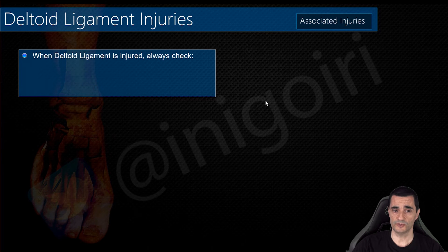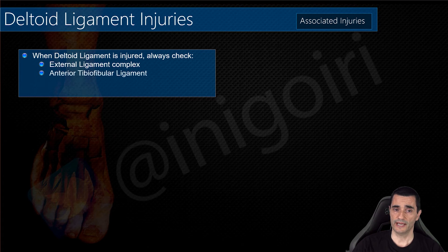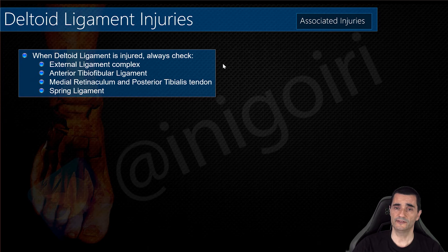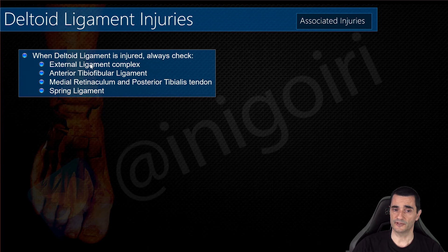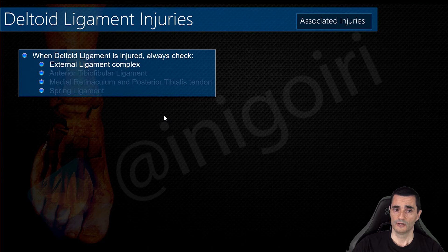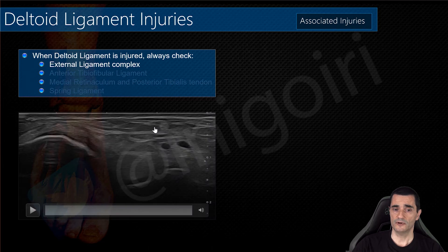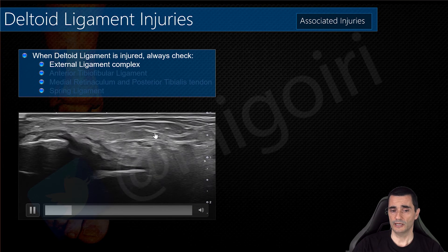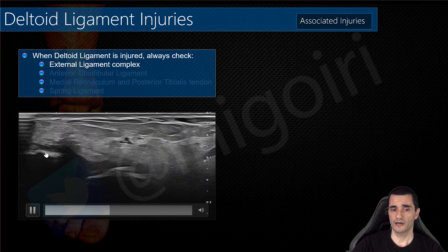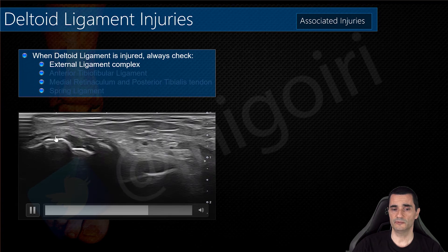Now we are going to check other associated injuries. When we detect an injury of the deltoid ligament, we always need to check the external ligament complex, the anterior tibiofibular ligament, the medial retinaculum, the posterior tibialis tendon, and the spring ligament — all these structures must be assessed. Here is an example of a medial collateral ligament injury with affection of the anterior talofibular ligament.